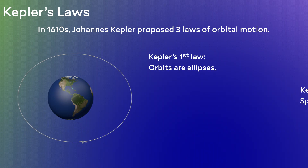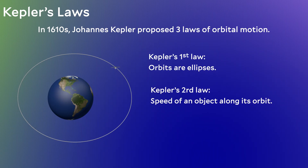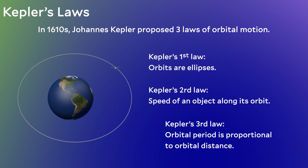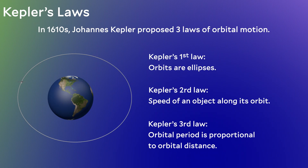Kepler's second law describes the speed at which an object moves in its orbit. Briefly, an object in a circle has the same speed throughout its orbit, but for an ellipse the speed is faster in the inner regions compared to the outer. The final third law is what we need right now. Kepler's third law provides a relationship between the orbital period of an object and its distance from the thing it's orbiting.